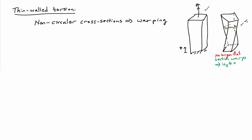So you have uz being non-equal to zero. This situation is not too hard to solve, but it's certainly a fair bit harder than what we've been doing. In particular, it requires the solution to partial differential equations. And the theory that's used to solve those types of problems is known as Saint-Venant Torsion. It comes down to solving Poisson's equation, which is not a hard equation to solve, but it's also not particularly easy unless the cross-sectional shape is rather simple.